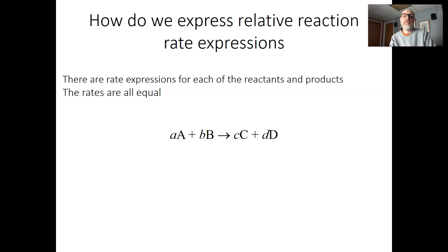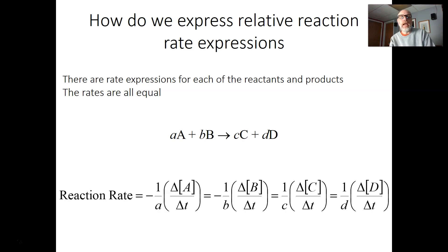If we look at a particular chemical reaction where the small letters represent the stoichiometric coefficients from balancing the equation, and we want to write the rate expressions for each of the reactants and products, we would say the reaction rate equals the change in concentration of reactant A over the change in time, then divide by the small a — or multiply by 1 over a. Because reactant A is disappearing, that rate will have a minus sign. If we do the same thing with B, it would be the change in concentration of B over change in time times 1 over b, and it would be negative because it's disappearing.